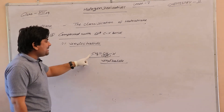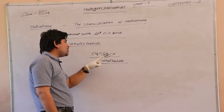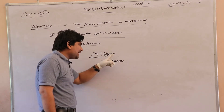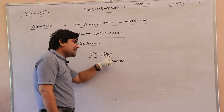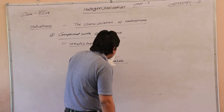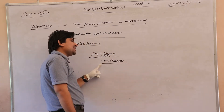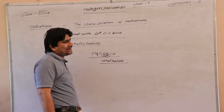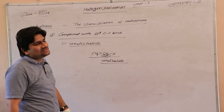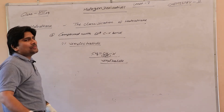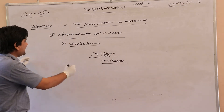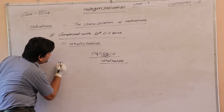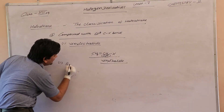The common name of this compound is vinyl halide. If chlorine is present we can say vinyl chloride, and if bromine is present we can say vinyl bromide.